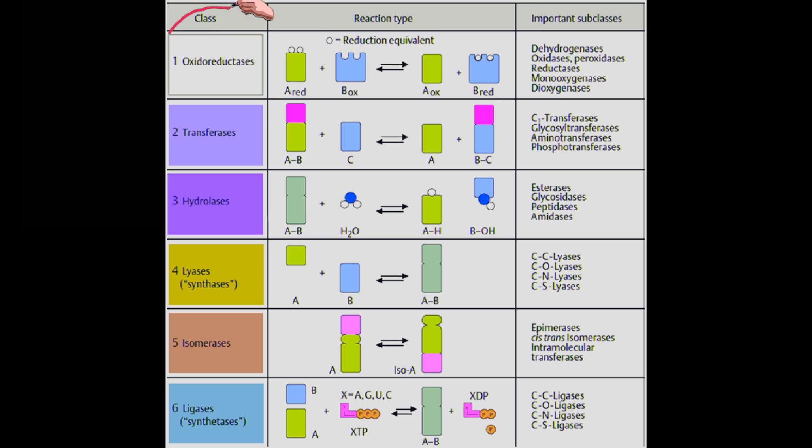Oxidoreductases, these are going to add or remove hydrogens. They're going to do redox reactions. Transferase, exactly what it sounds like. They're going to transfer functional groups between a donor and acceptor molecule. An example would be our kinases that regulate metabolism. They transfer phosphate from ATP. They're going to break the bonds. They're going to transfer phosphate. A high energy bond in ATP is broken, and they take the phosphate and put it on another molecule. So they're going to be transferring the functional groups.